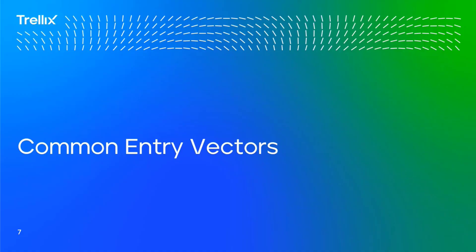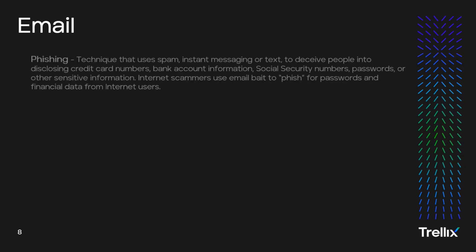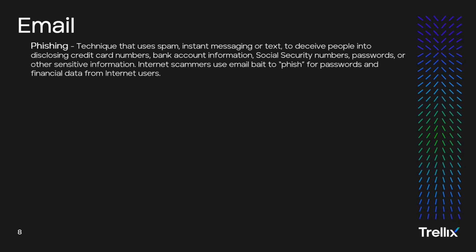First up, let's take a look at common entry vectors. First up is email, and the first one we're going to look at is phishing. Phishing is a technique that uses spam, instant messaging, or text to deceive people into disclosing credit card numbers, bank account information, social security numbers, passwords, or other sensitive information. Internet scammers use email bait to phish for passwords and financial data from internet users. Some common phishing attacks are email phishing, which is the most prevalent, spear phishing, whaling, smishing, and vishing.